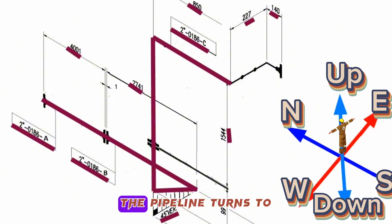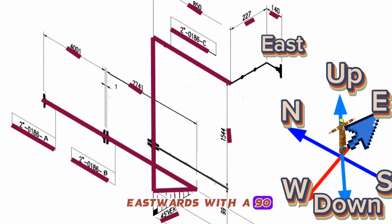In this point, the pipeline turns to eastwards with a 90-degree elbow, a length 227 millimeters.